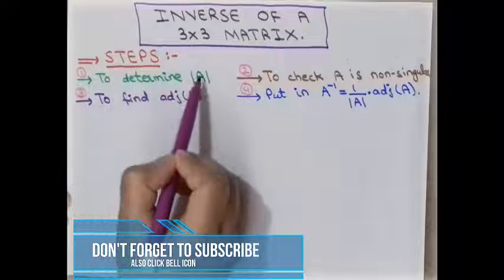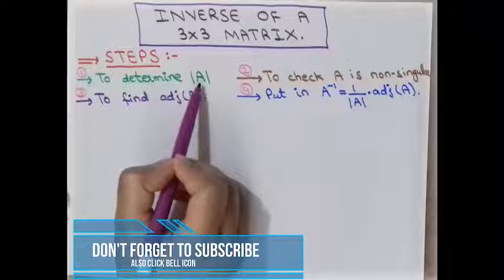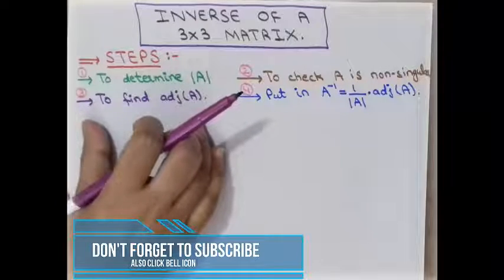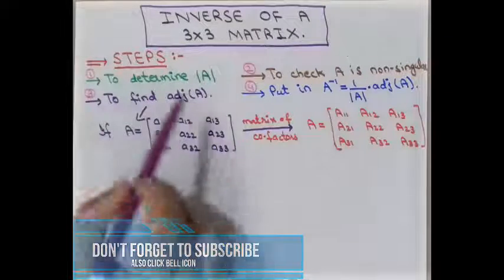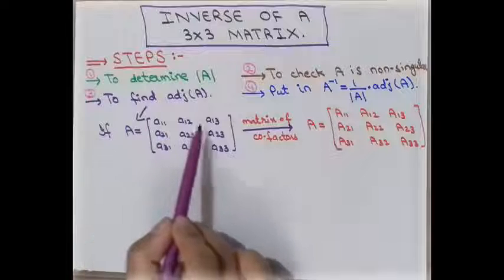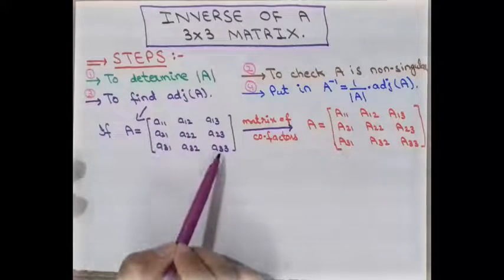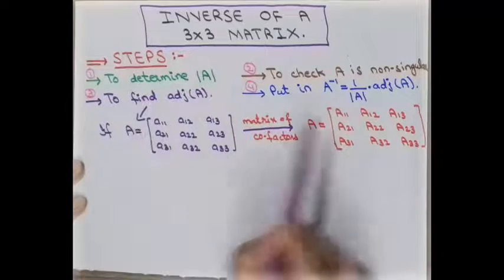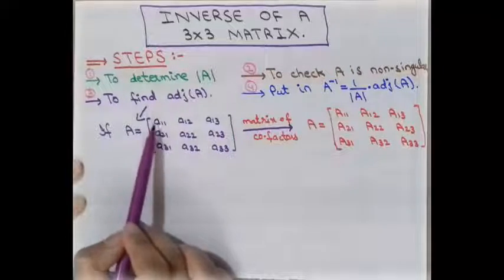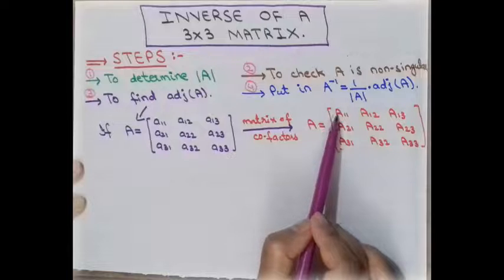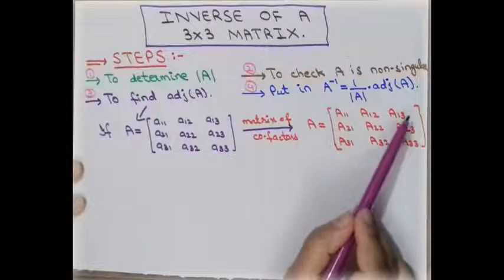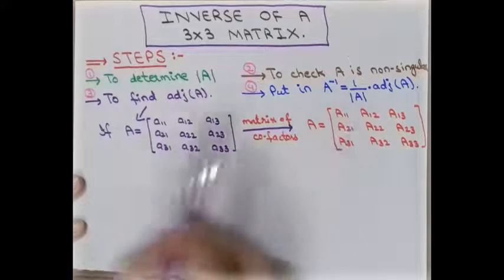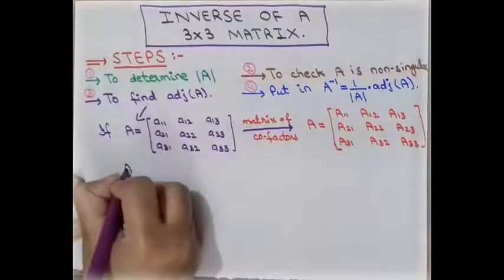To determine the determinant of A, we already discussed how to find the determinant of a 3 by 3 matrix. Now we will discuss how to find the adjoint of the matrix. If we have a matrix A with elements A11, A12, A13 and so on, we have to find the matrix of co-factors. The co-factor of element A11 will be denoted by capital A11.